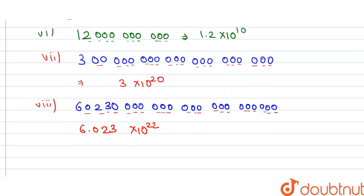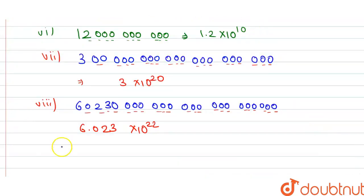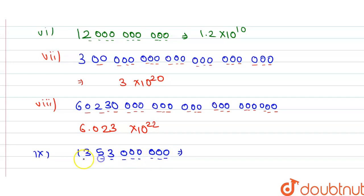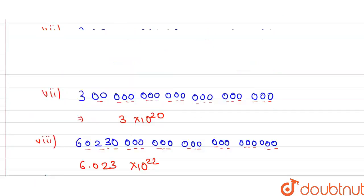Now the next statement: Earth has 1,353,000,000 cubic kilometers of sea water. So the number is 1,353,000,000. Just count the number of digits: 1, 2, 3, 4, 5, 6, 7, 8, 9. So we can write 1.353 × 10⁹.